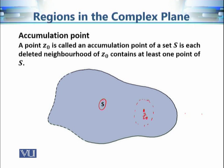Let's take a point Z0 inside the set S. Whatever deleted neighborhood of Z0 we choose, it will always contain some points of S. We can choose a smaller deleted neighborhood and it still contains points of S. So we can say that Z0 is an accumulation point.